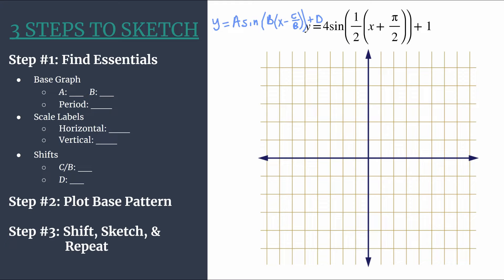So jump in. Step one is to find our essential information. This is where we analyze and get organized so that the actual graphing is very easy. So first, we'll work on our base graph and our scale labels. This will be used to plot the base pattern in step two. We can clearly see a is the coefficient in front of sine. So a is 4. And this tells us the amplitude of our graph. So it's a vertical stretch. Normally, the parent sine graph, its amplitude is 1. But here, it's 4. So from midline to maximum or midline to minimum, the length will be 4 units.